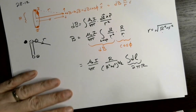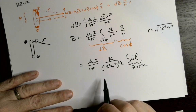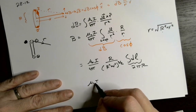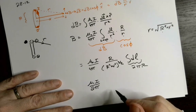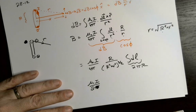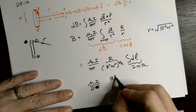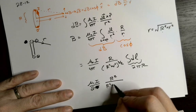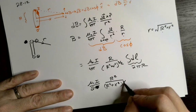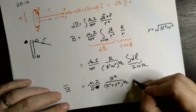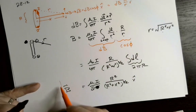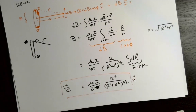So we don't actually have to integrate anything difficult. That leaves us with mu-zero i over two times R squared over (R squared plus x squared) to the three-halves, in the x-hat direction. Checking that answer with the book: mu-zero i R squared over 2 times (R squared plus x squared) to the three-halves — that is correct.